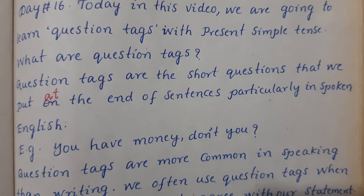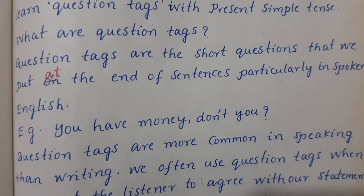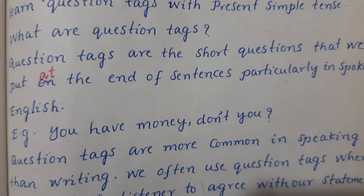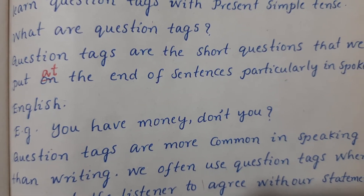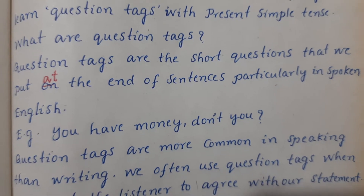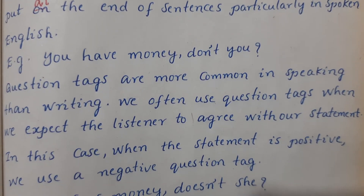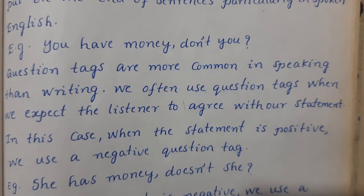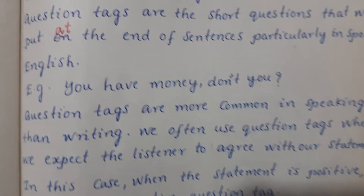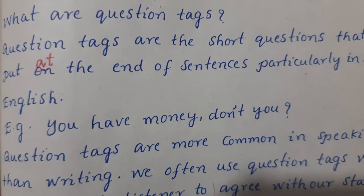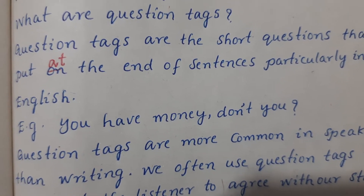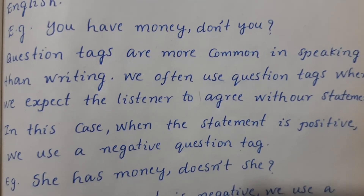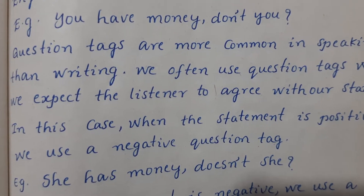Question tags are short questions. 'Don't you' is a short question. 'You have money' is the statement, and I expect the listener to agree with it. When the statement is positive, we use a negative question tag. For example: 'You have money, don't you?' — the statement is positive, and the question tag is negative.